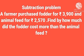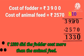Now the subtraction problem. A farmer purchased fodder for Rs. 3,900 and animal feed for Rs. 2,570. By how much did the fodder cost more than the animal feed? Cost of fodder is Rs. 3,900 and cost of animal feed is Rs. 2,570. Subtracting: 0 minus 0 is 0. We cannot do 0 minus 7, so borrow from 9: 9 becomes 8 and 0 becomes 10. 10 minus 7 is 3. 8 minus 5 is 3. 3 minus 2 is 1. Therefore Rs. 1,330 more did the fodder cost than the animal feed.